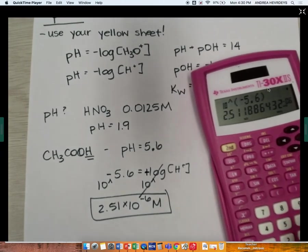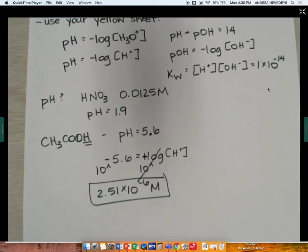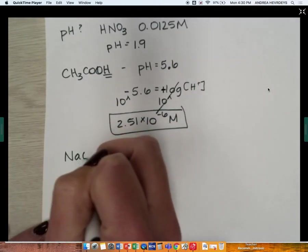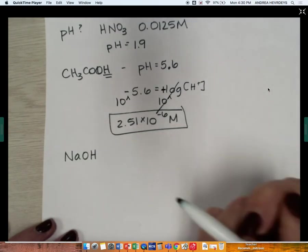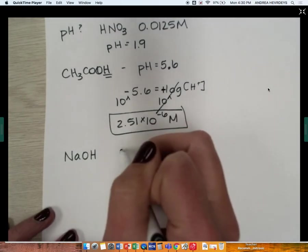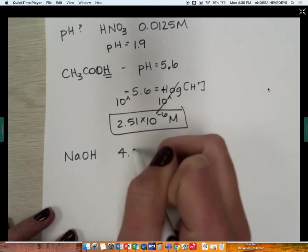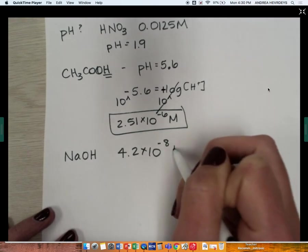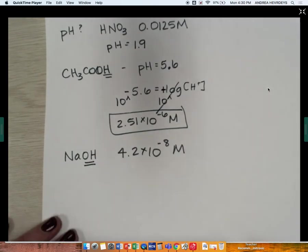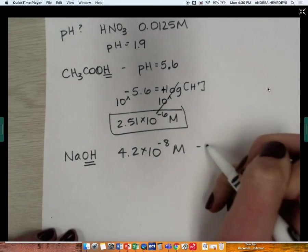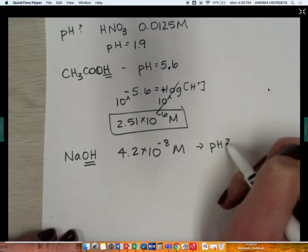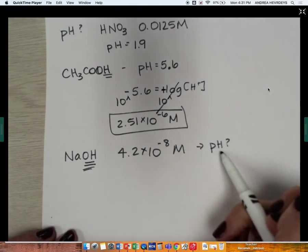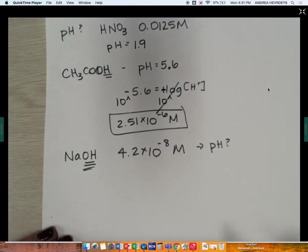Now let's just do another example. Let's say I know that I have a solution of sodium hydroxide, and it is a 4.2 times 10 to the negative 8 molar hydroxide ion concentration. But I really want to know what the pH of that is.